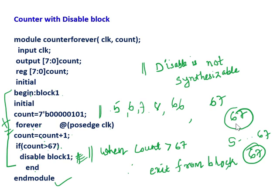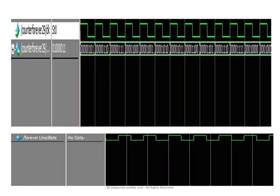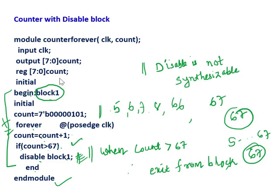In this way you can exit from this forever loop. You have to remember begin colon block1 - this is a naming block, allowed in Verilog. Begin colon block1, then disable block1 - this block will be exited once the condition is not met. The waveform view shows counting: 5, 6, 7, 8, 9, 10, 11 - it is counting, it will count till 67, then at 68 it will exit from the block.